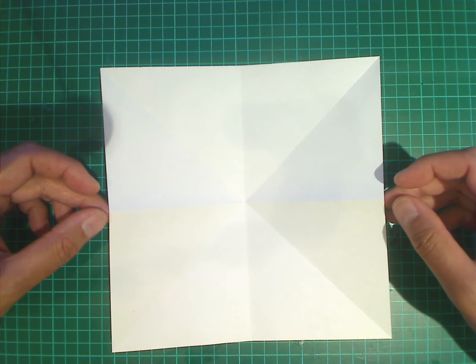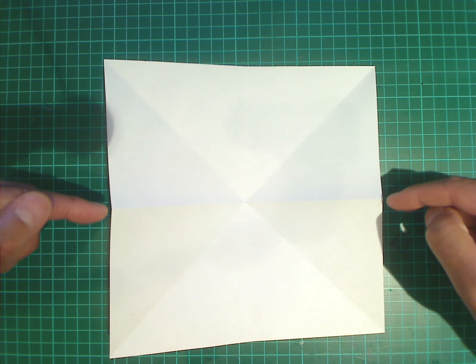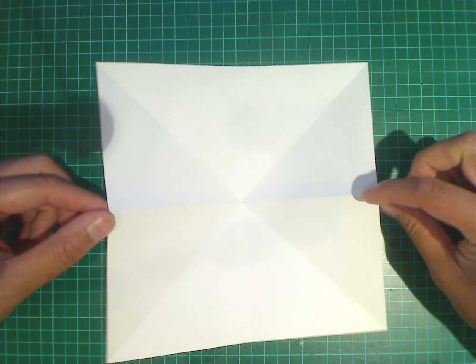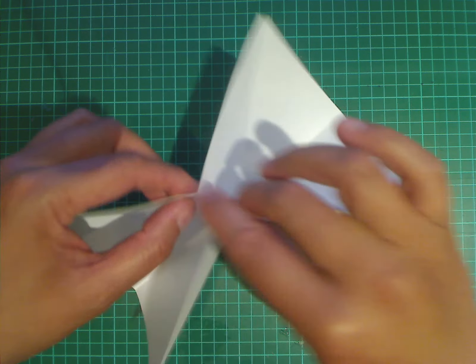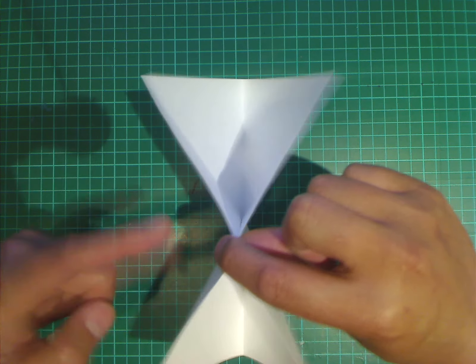And what we're going to do now is take these two midpoints, the middle left and right points, and bring them together. And hold them with your finger and thumb.